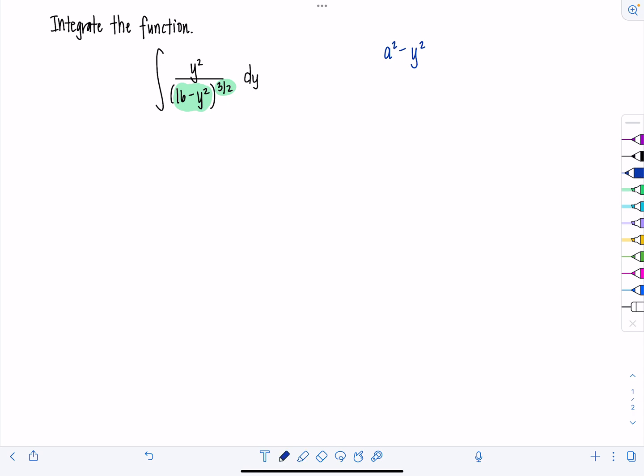What we're going to do for this particular integral is let y equal four sine theta. Where's the four coming from? Because a squared is 16, so that makes a equal to four. Then dy would be four cosine theta d theta. So let's go ahead, make that substitution and change our variables in the integral.